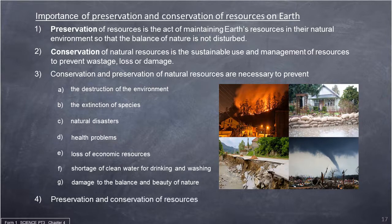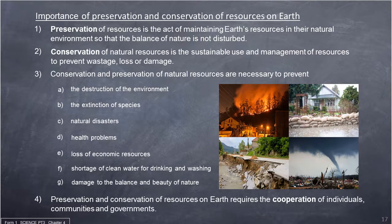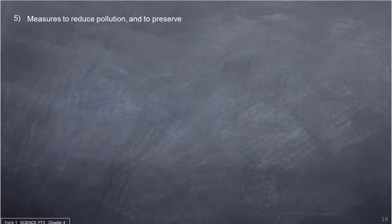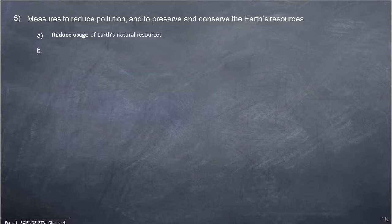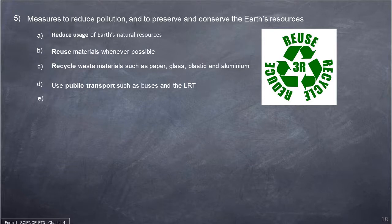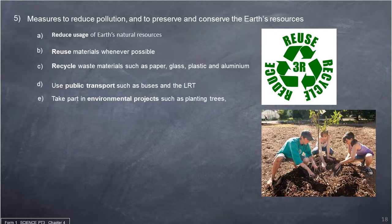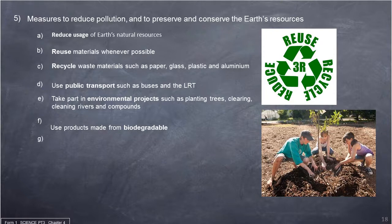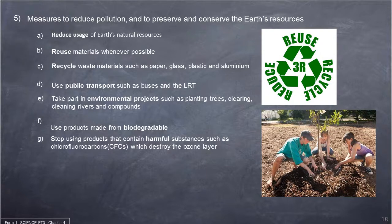Preservation and conservation of resources requires the cooperation of individuals, communities and governments. Measures to reduce pollution and to preserve and conserve Earth's resources include: reduce usage of natural resources, reuse materials whenever possible, recycle waste materials such as paper, glass, plastic and aluminium, use public transport such as buses and the LRT, take part in environmental projects such as planting trees, cleaning rivers and compounds, use products made from biodegradable materials, and stop using products that contain harmful substances such as chlorofluorocarbons (CFCs) which destroy the ozone layer.